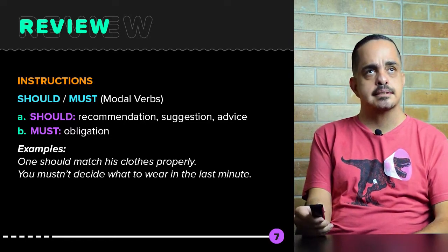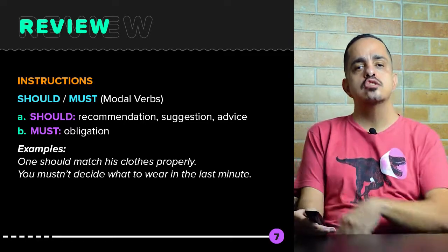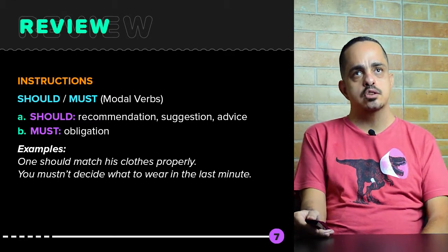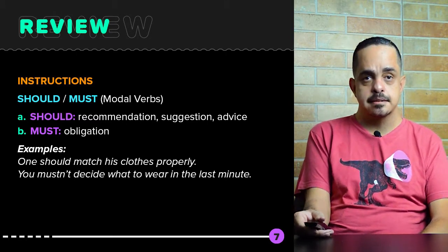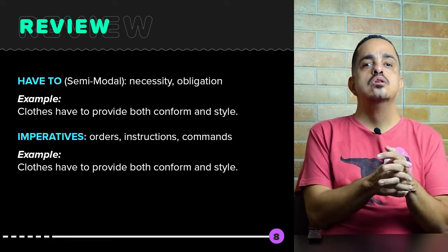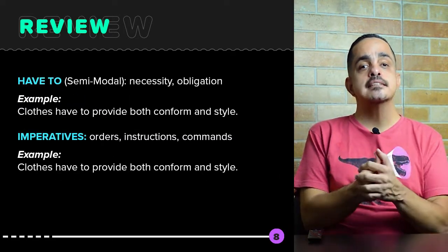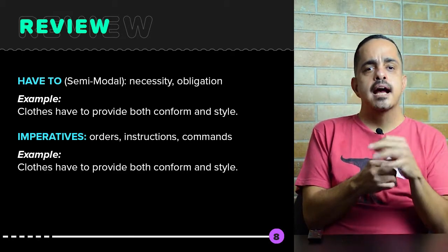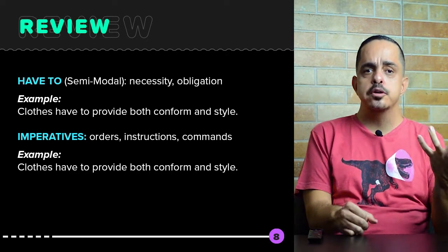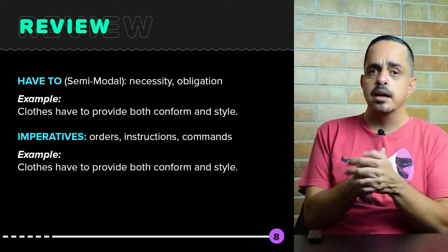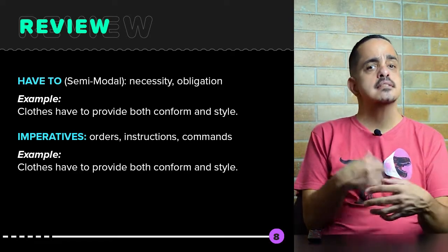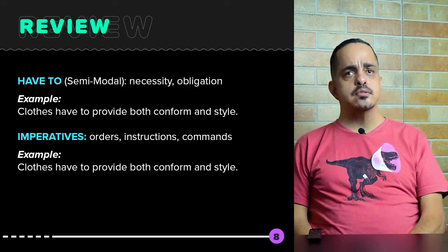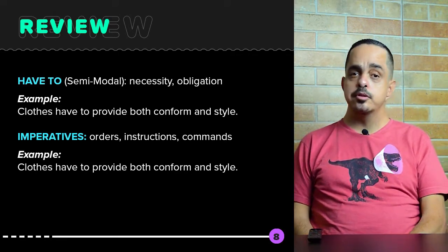Examples using should and must: 'One should match his clothes properly,' or 'You must not decide what to wear at the last minute.' Have to will transmit the idea of a necessity or an obligation. For example: 'Clothes have to provide both comfort and style.' And imperatives will transmit the idea of orders, instructions, commands. For example: 'Continue to dress what you like and not what your friends like.'